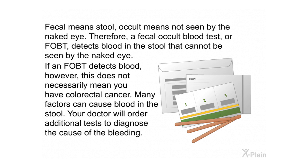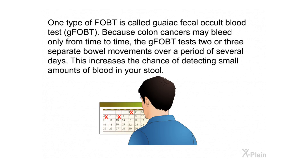Fecal means stool; occult means not seen by the naked eye. Therefore, a fecal occult blood test or FOBT detects blood in the stool that cannot be seen by the naked eye. If an FOBT detects blood, however, this does not necessarily mean you have colorectal cancer — many factors can cause blood in the stool. Your doctor will order additional tests to diagnose the cause of the bleeding.